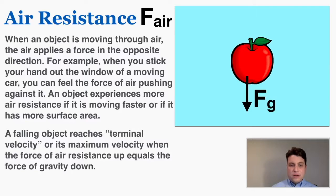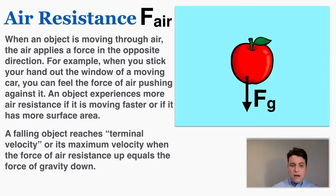The force of air resistance happens when an object is moving through air. The air applies a force in the opposite direction. For example, when you stick your hand out the window of a moving car, you can feel the force of air pushing against it. An object experiences more air resistance if it is moving faster or if it has more surface area.